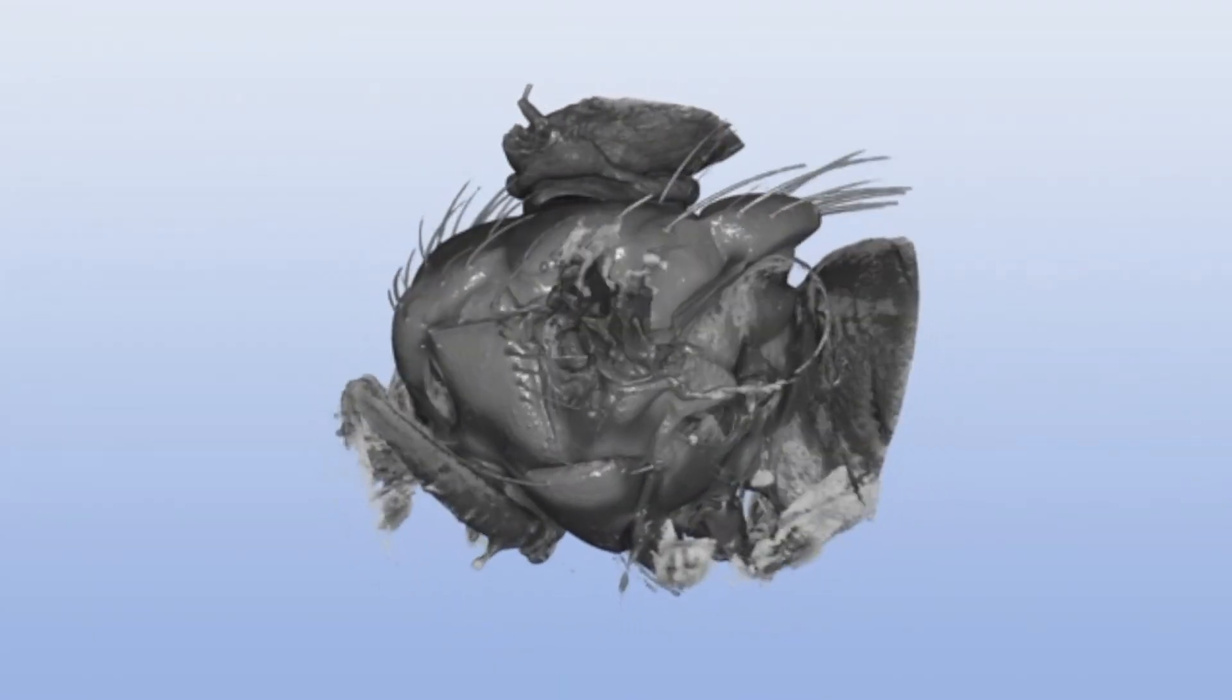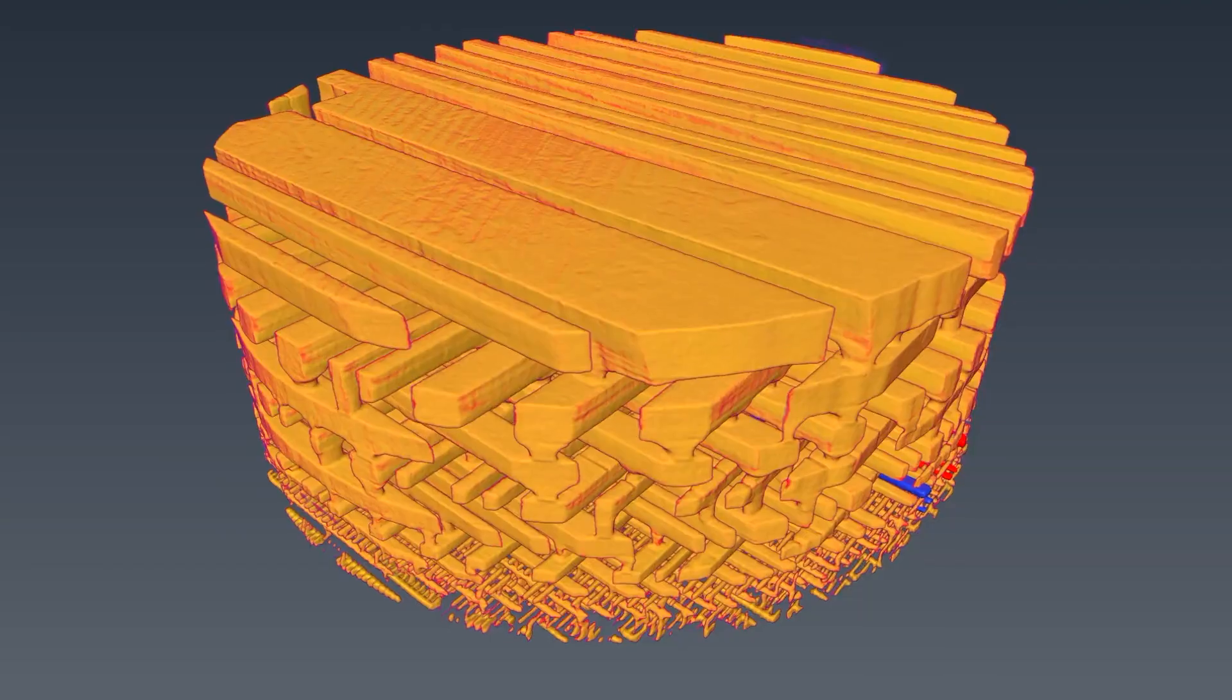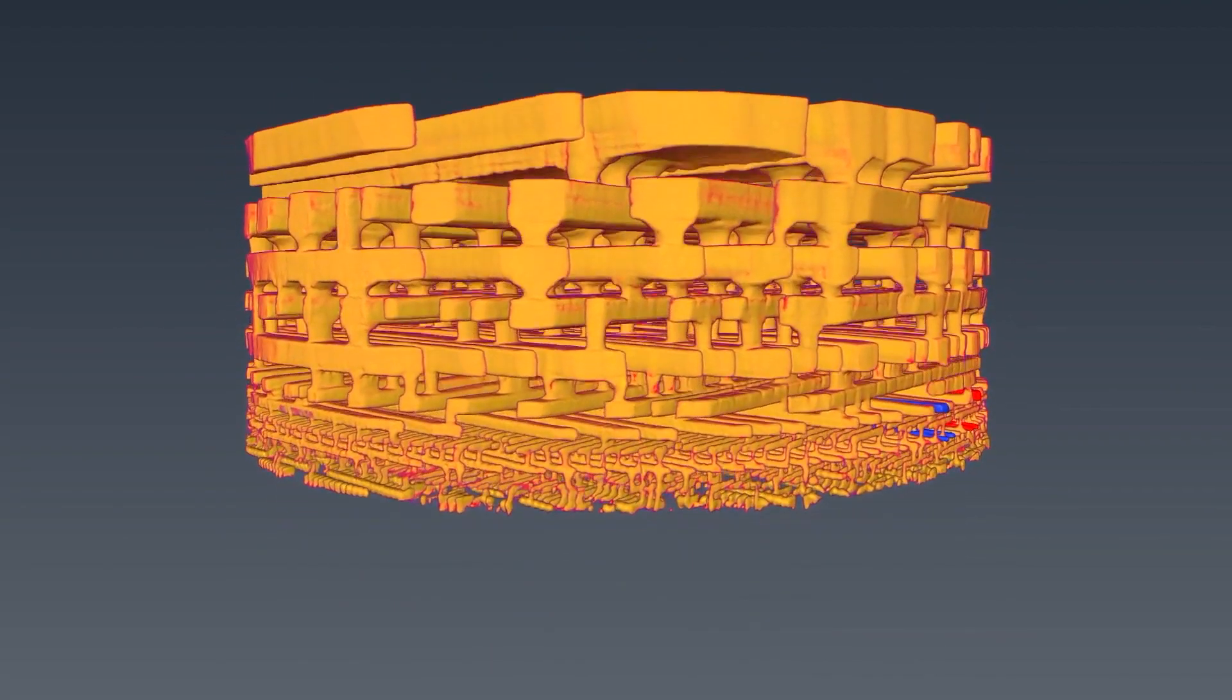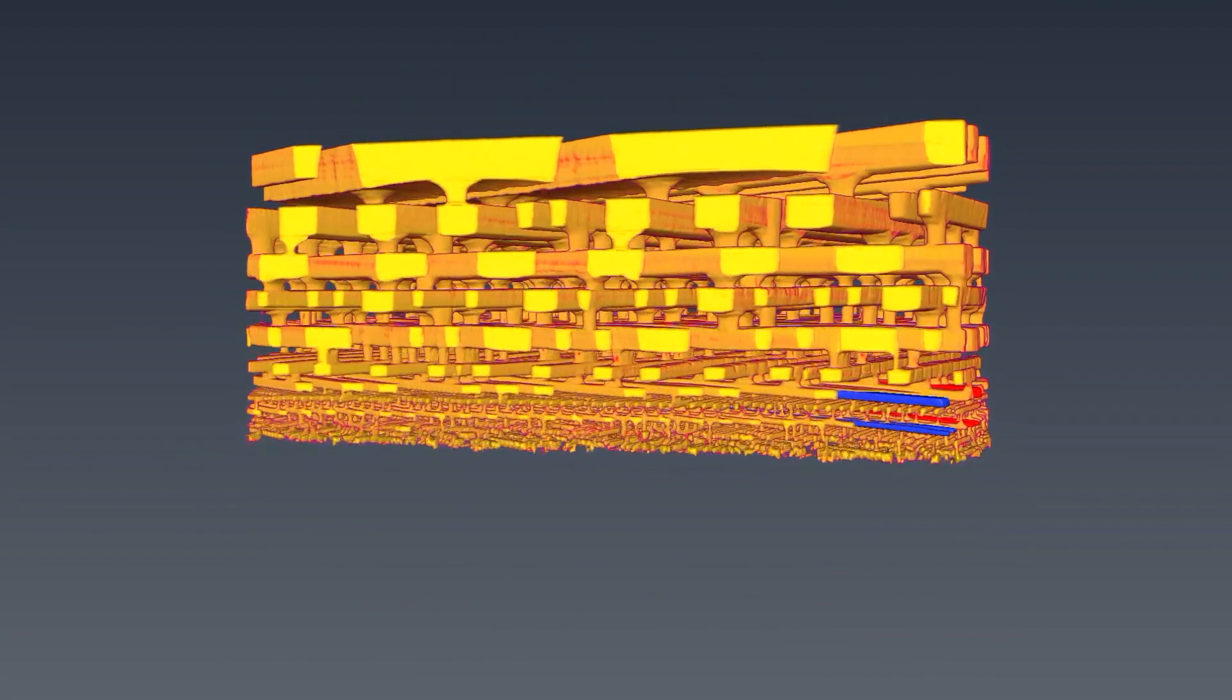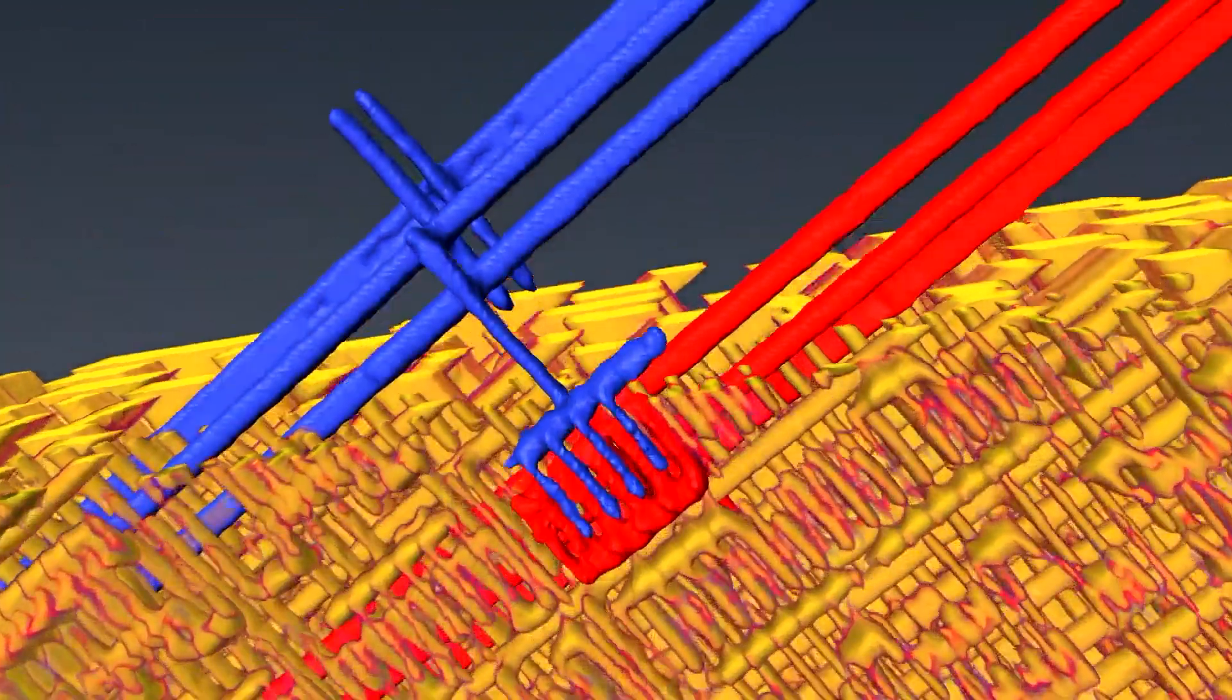You can follow the configuration of flight muscles during flight in common blowflies using macrotomography, and map out the nanometer-detailed architecture of complex hierarchical structures over several length scales using scanning scattering techniques.